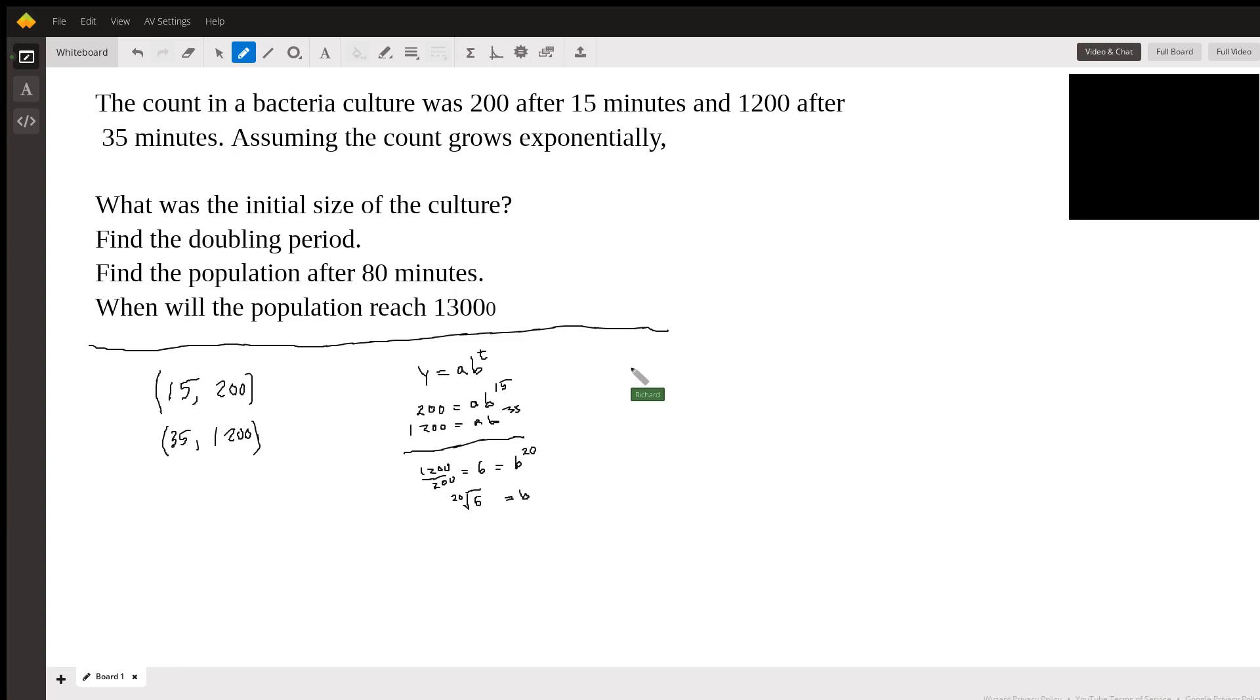All right, so what was the initial size? Well, to know that, we have to try to find A. A is the initial size. So we know that when time is zero, Y equals A. We want to go backwards here. Okay, so we have to find A.